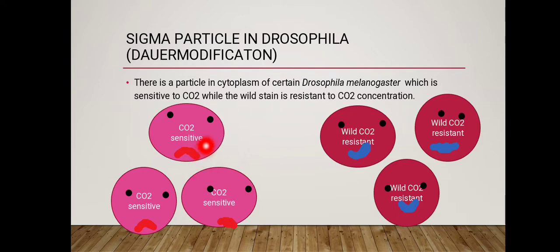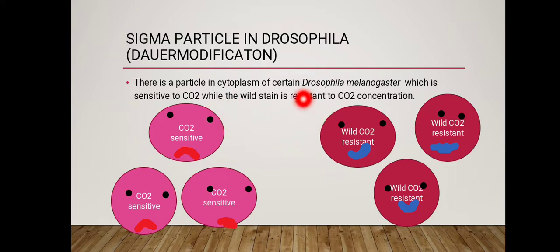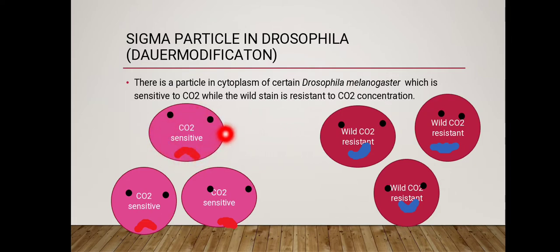In Drosophila, there were two types of colonies. One type included Drosophila which were sensitive to the carbon dioxide concentration present in their environment, and the other — the wild types of Drosophila — were resistant to the carbon dioxide concentration in their environment.